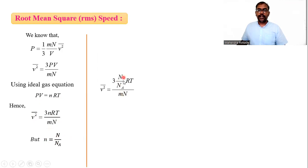Here we substituted small n. Then this capital N and this capital N get cancelled. So we get the formula 3RT divided by m into NA.